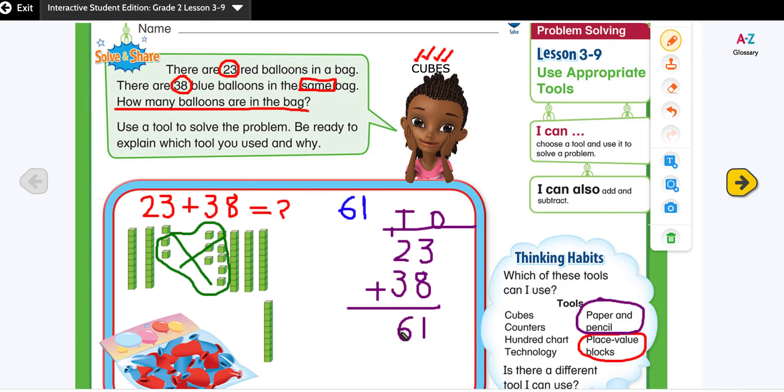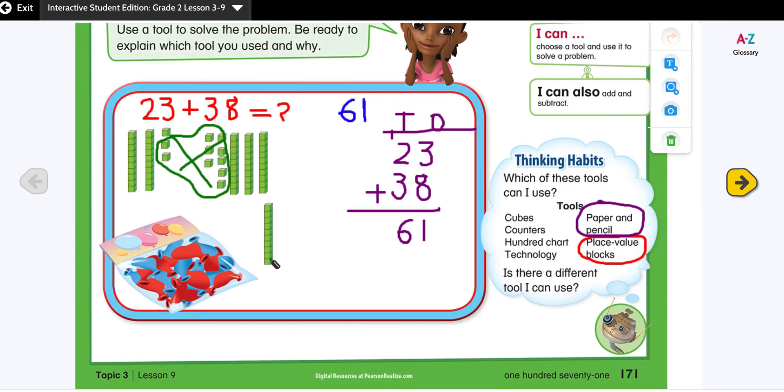61 is the sum that I got from the standard algorithm method. I also got the same sum when I was using the place value blocks. So this is my strategy.